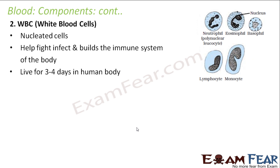In this picture you can see the different types of WBC cells: neutrophil, eosinophil, basophil, lymphocyte, and monocyte. These are the different types of white blood cells. We will discuss the details of these cells in our higher classes.